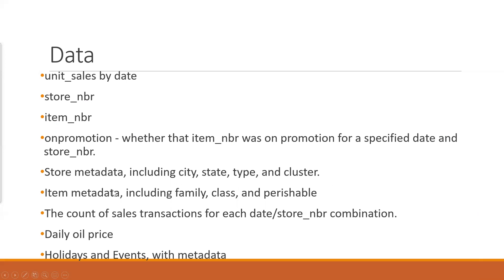Store metadata includes city, state, type, etc. They also include item metadata including the item family and whether the item is perishable, such as vegetables. Additionally, there's the count of sales transactions for each date and store combination, and they also include the oil price - which is very interesting, as oil price will affect many items.